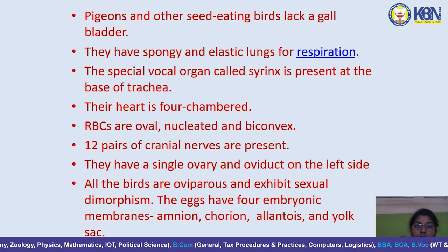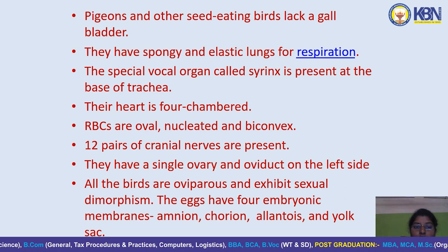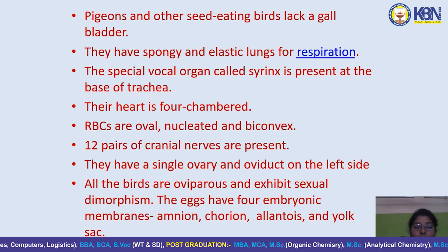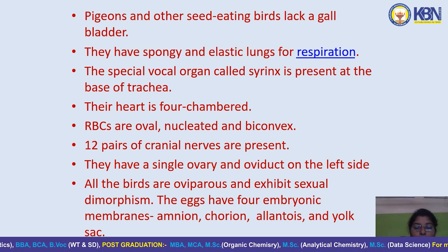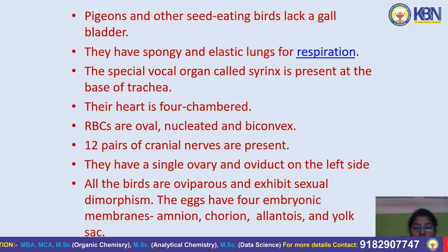Pigeons and other seed-eating birds lack a gallbladder. They have spongy and elastic lungs for respiration. The special vocal organ called syrinx is present at the base of the trachea. Their heart is four-chambered. Red blood cells are oval, nucleated, and biconvex. Twelve pairs of cranial nerves are present. They have a single ovary and oviduct on the left side.